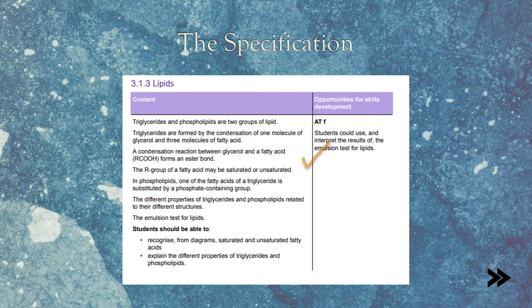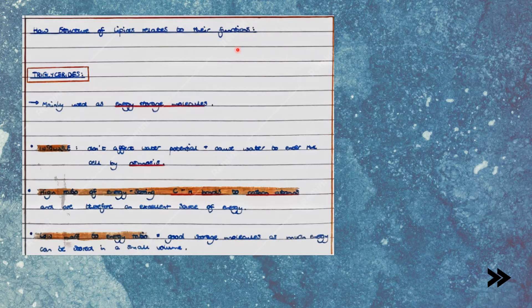Now that we've given a general overview of triglycerides and phospholipids and their structures, we need to relate these structures to their functions. Triglycerides mainly act as energy storage molecules. They are insoluble, so they don't affect water potential, which may cause water to move into or out of cells by osmosis, which could cause cells to swell, burst, or shrink. They also have a high ratio of energy-storing C-H bonds to carbon atoms, and are therefore excellent sources of energy. They have a low mass to energy ratio, meaning that lots of energy can be stored in a small volume.